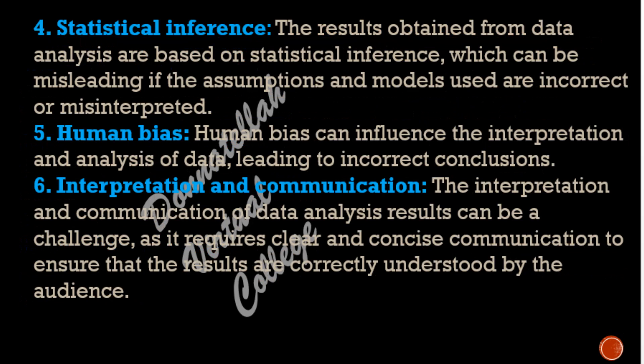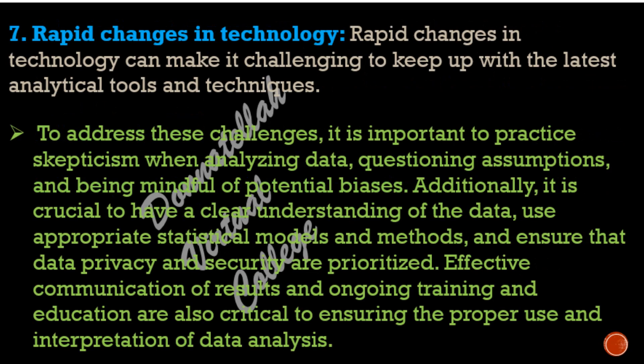4. Statistical inference: the results obtained from data analysis are based on statistical inference, which can be misleading if the assumptions and models used are incorrect or misinterpreted. 5. Human bias: human bias can influence the interpretation and analysis of data, leading to incorrect conclusions. 6. Interpretation and communication: the interpretation and communication of data analysis results can be a challenge, as it requires clear and concise communication to ensure that the results are correctly understood by the audience. 7. Rapid changes in technology: rapid changes in technology can make it challenging to keep up with the latest analytical tools and techniques.